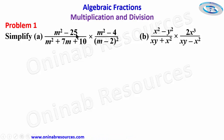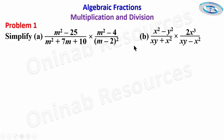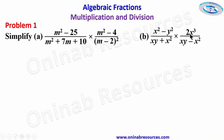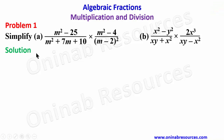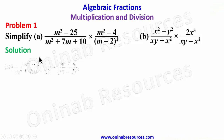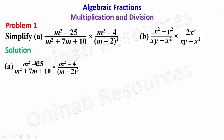Problem 1a: simplify m squared minus 25, all over m squared plus 7m plus 10, times m squared minus 4 over m minus 2, all squared. Problem 1b: x squared minus y squared over xy plus x squared, times 2x cubed over xy minus x squared. We start the solution from part a, and we are going to factorize each of the expressions that make up the fractions.